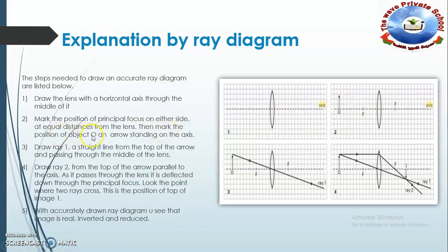Then mark the position of the object O — represented by an arrow on the axis. Draw ray one from the top of the arrow, passing through the middle of the lens as a straight line.